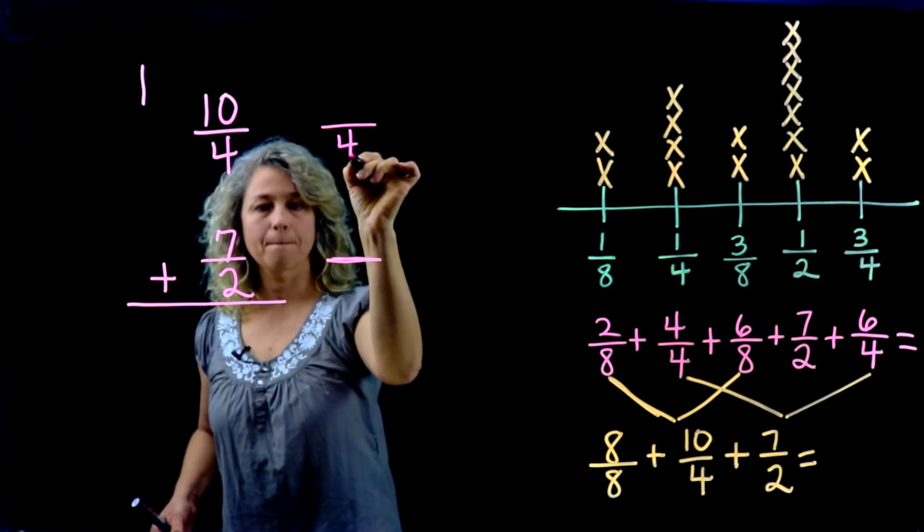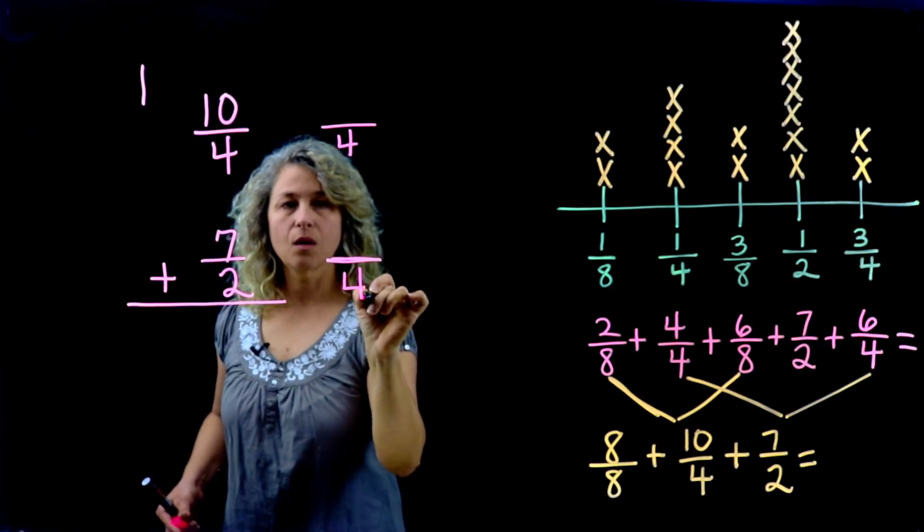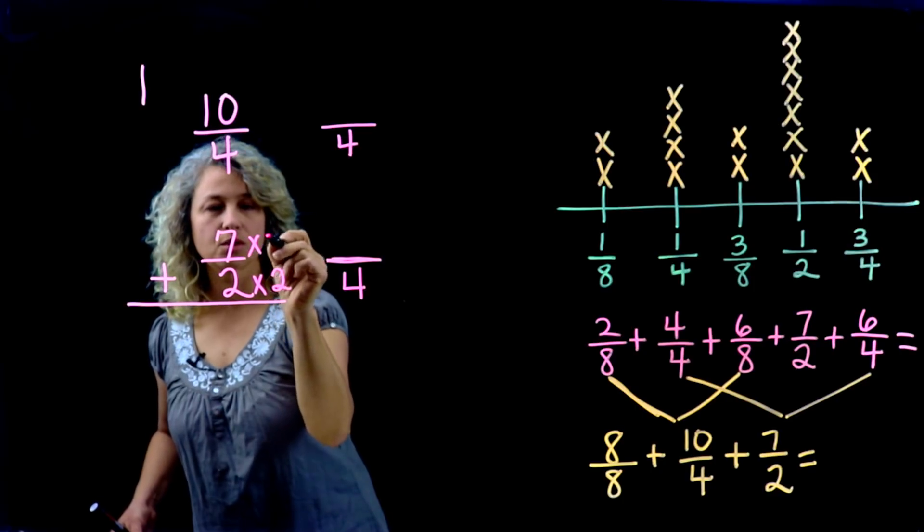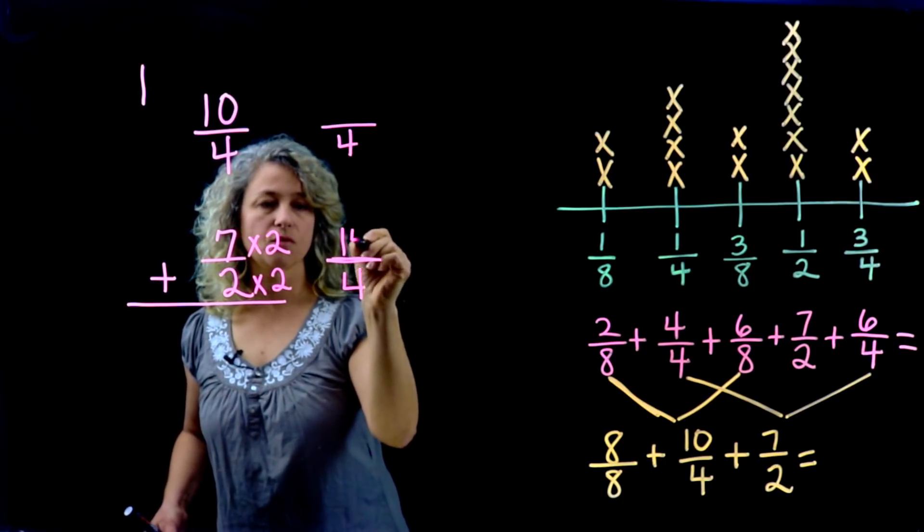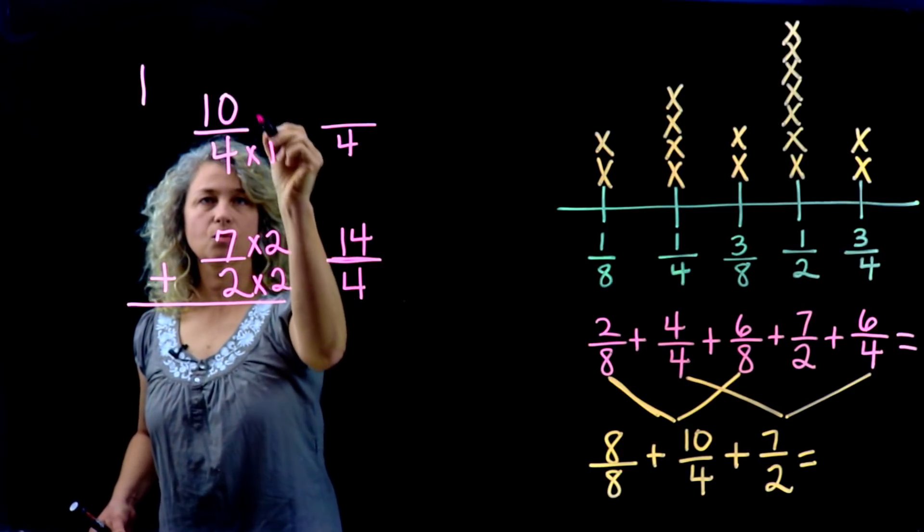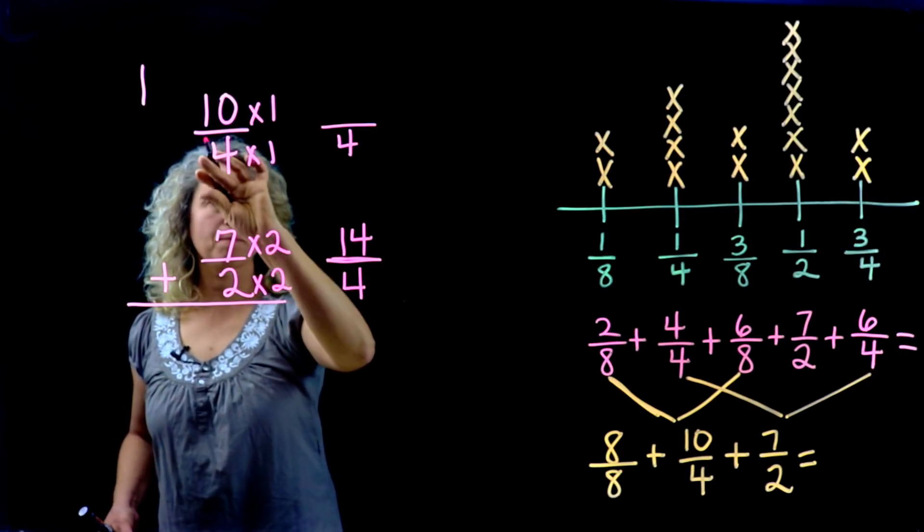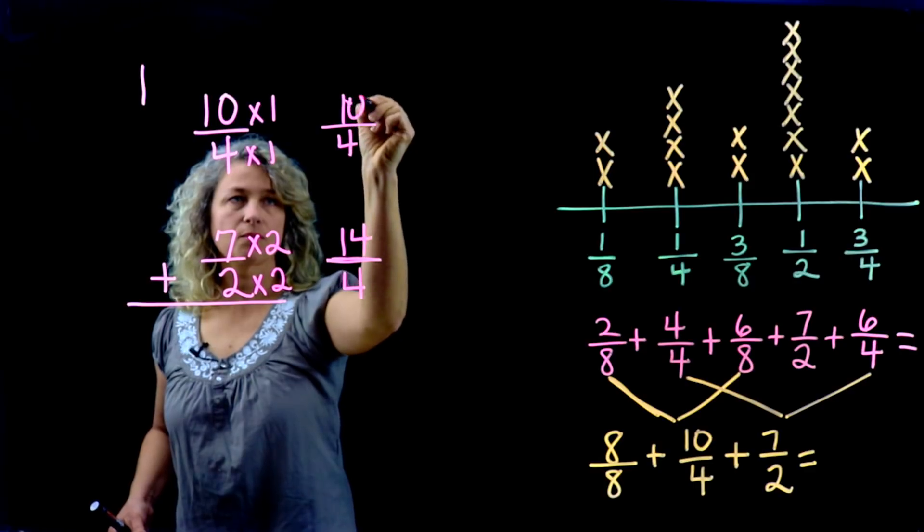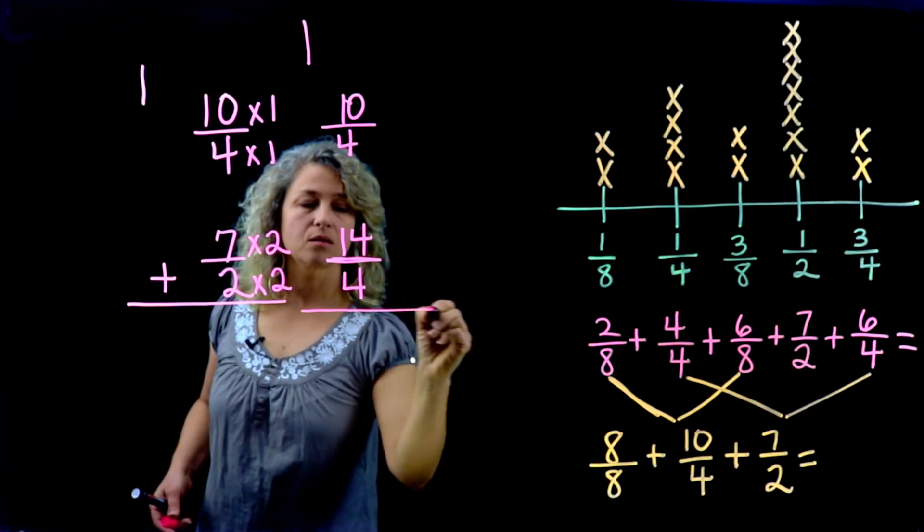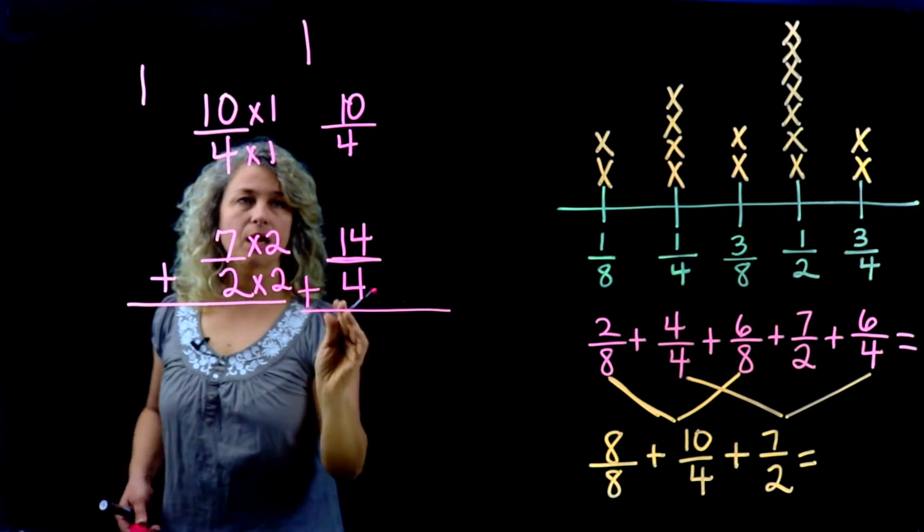The least common multiple would be four. We know that two goes into four two times, so times two, times two. Seven times two is fourteen. And four, this is just times one, times one, because it's the same.